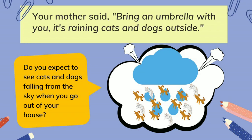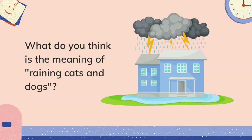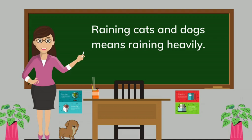Do you expect to see cats and dogs falling from the sky when you go out of your house? What do you think is the meaning of 'raining cats and dogs'? Raining cats and dogs means raining heavily.